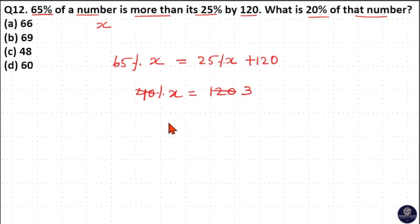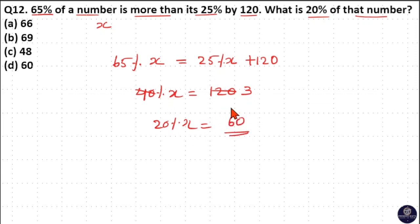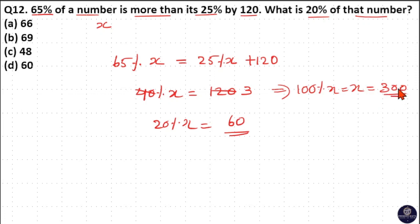Then 20 percentage of x will be 20 into 3, which is 60, because 1 percentage is 3 means 20 percentage is 20 into 3 equals 60. Also, 100 percentage of x equals 3 into 100, which is 300. So the number is 300 and 20 percentage of the number is 60. So option D is your answer.